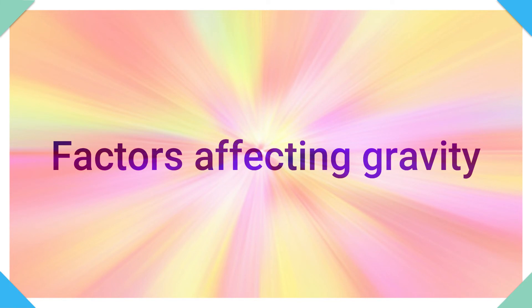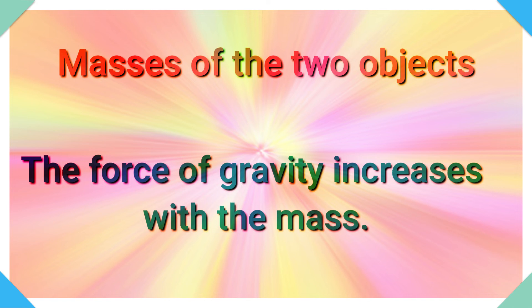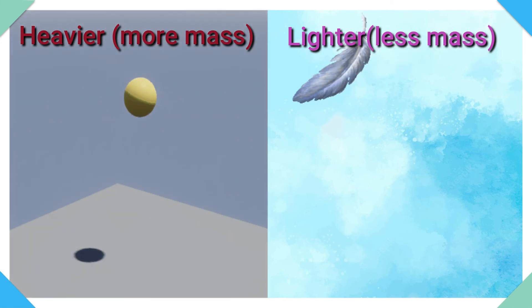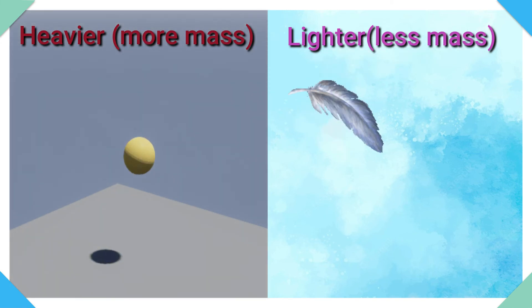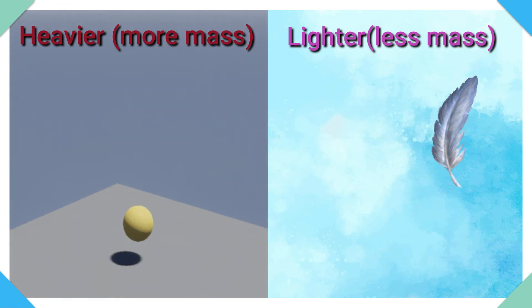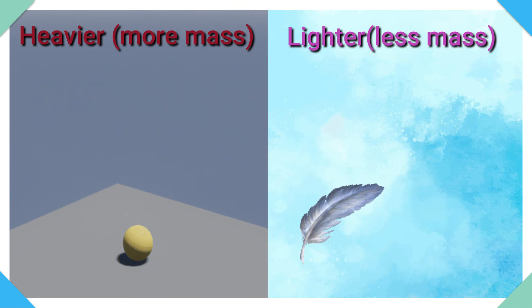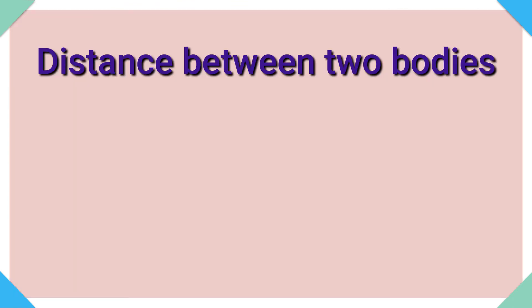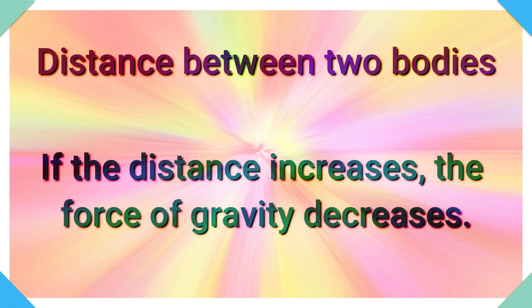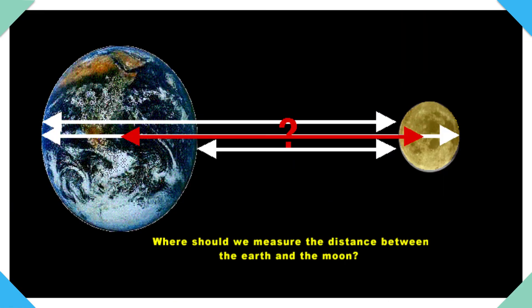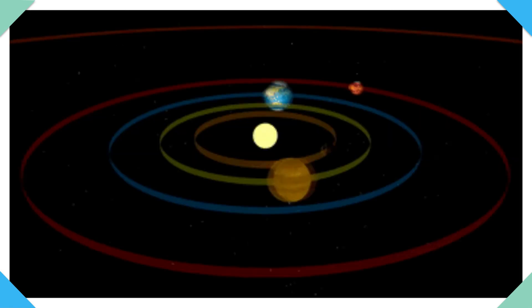Gravitational force is affected by the mass of the object. Heavier mass objects have more gravity than lighter mass objects, as you can see here. Next, distance between two bodies — if the distance increases, the force of gravity decreases.